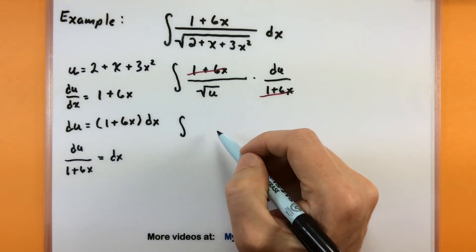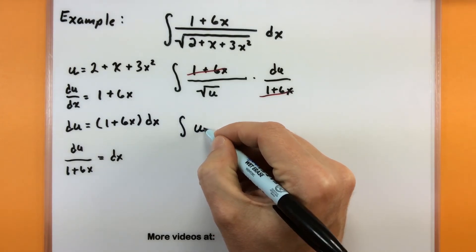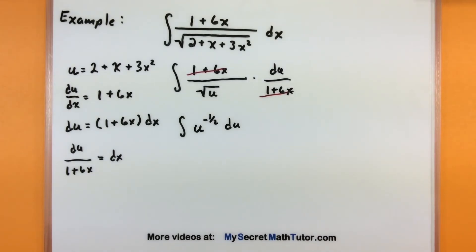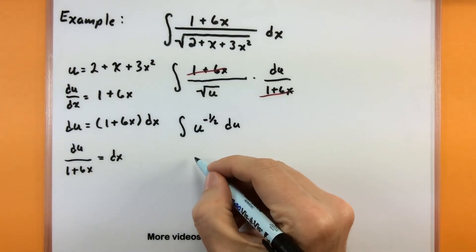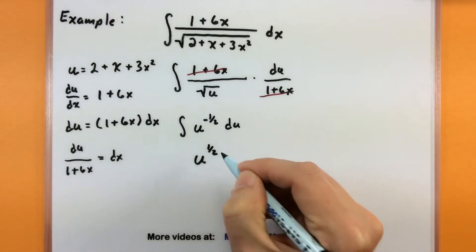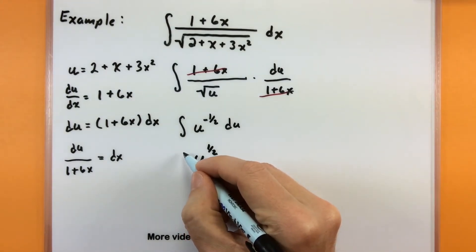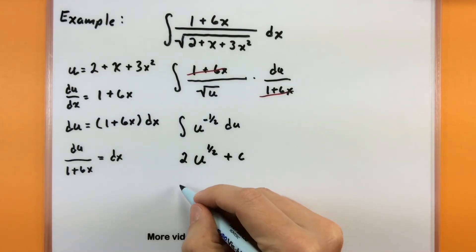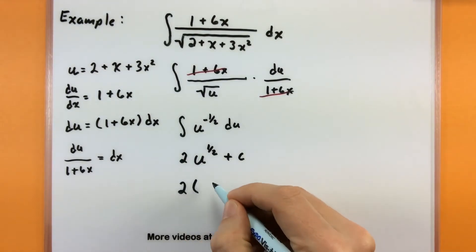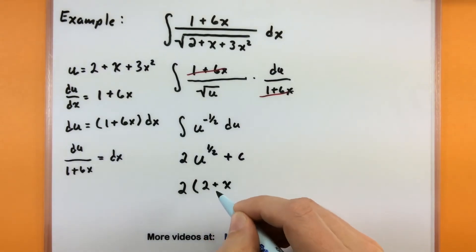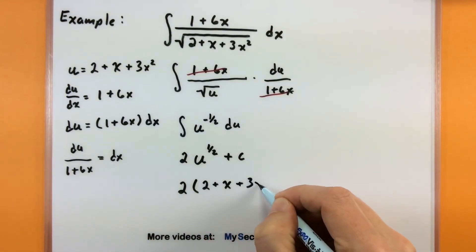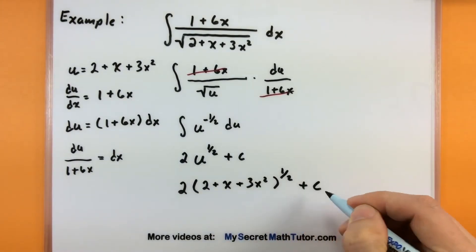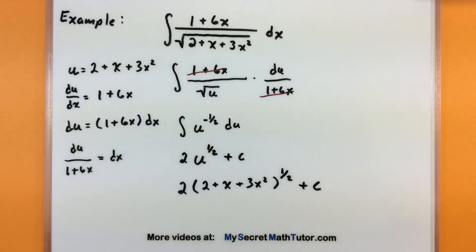We have u in the denominator, which I'll call u to the negative one-half power. Taking the antiderivative: add 1 to the power to get positive one-half, and dividing by that new power is the same as multiplying by 2. Now we return to the original variable, replacing u with 2 plus x plus 3x squared to the one-half power, plus our constant.